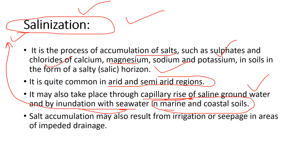Salt accumulation may also result from irrigation or seepage in areas with impeded drainage. Improper irrigation — where water stagnates in the same place repeatedly — results in salt formation within the soil itself. Irrigation water should always flow from one point to another; if it is stagnant, salinization is certain.